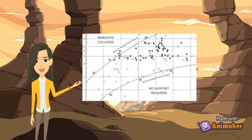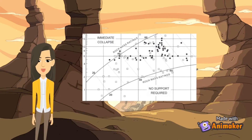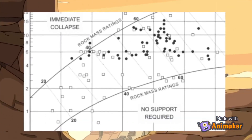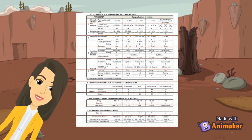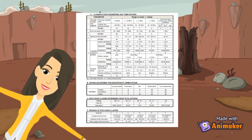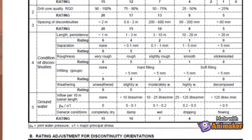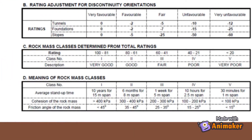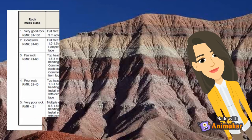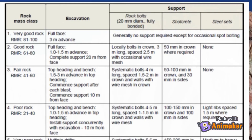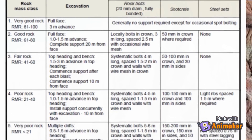As you can see, these are rock mass rating classifications of rock masses. This is the RMR classification guide for excavation and support in rock tunnels.